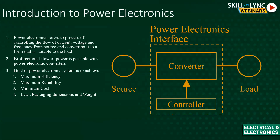Power electronics is really a power conversion strategy where we look to control the flow of current or regulate a voltage between a source and a load. We have a source — for example, a battery — and we're looking to drive a load such as a motor. Power electronics is needed in between because we want to convert that energy, whether AC to DC or through other conversion methods.